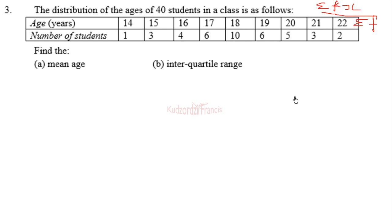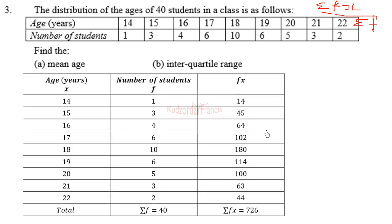Let's do that. These values for x, the ages, are the exact values over here. Then the values for the number of students, or the frequency, are the values here.